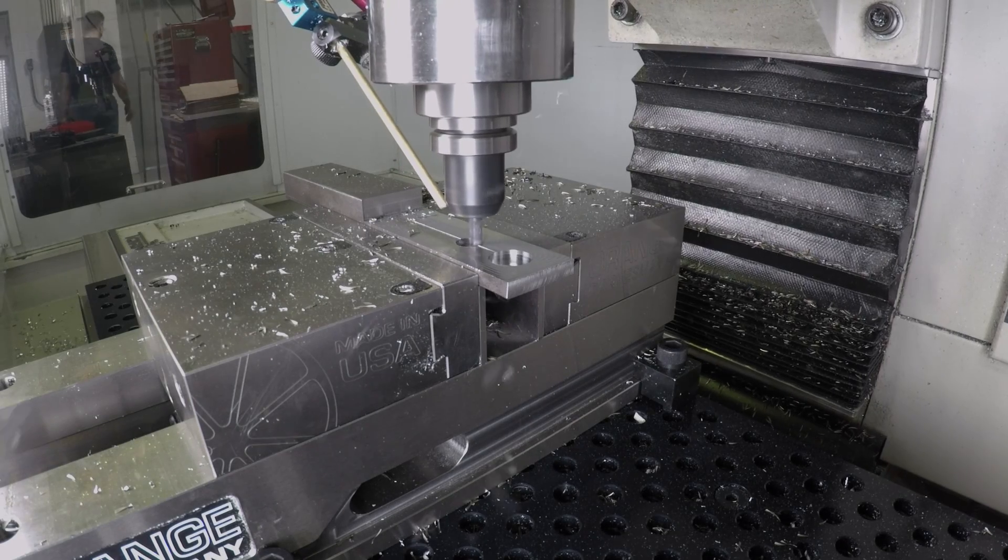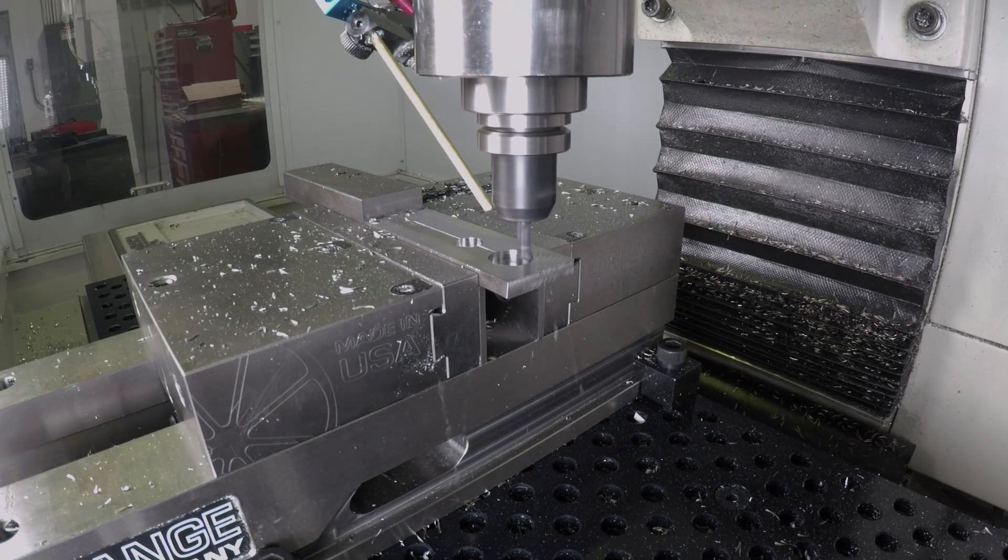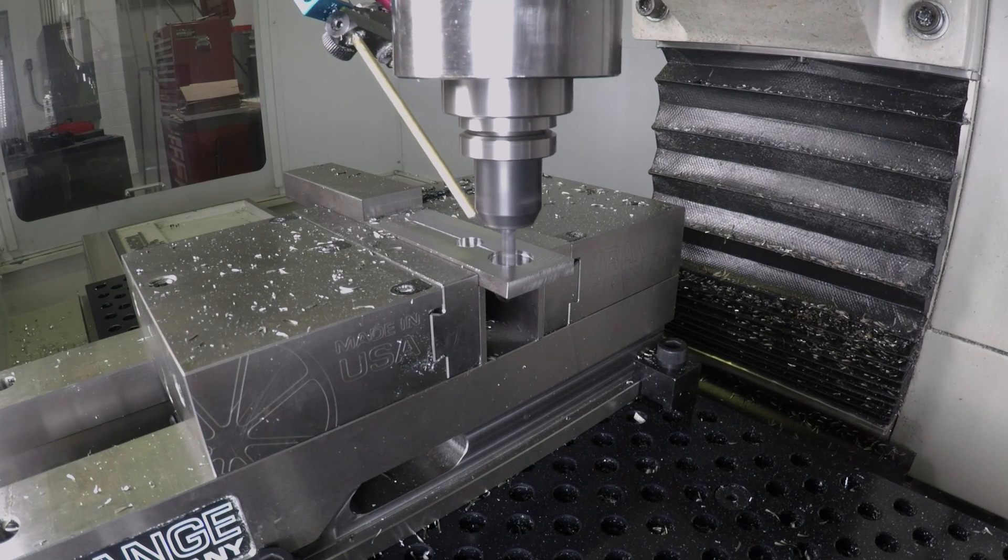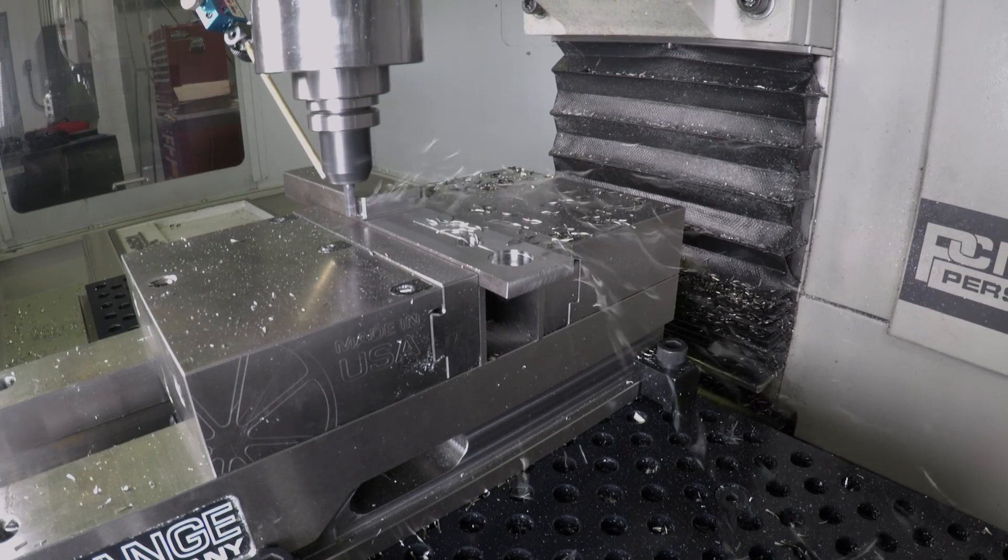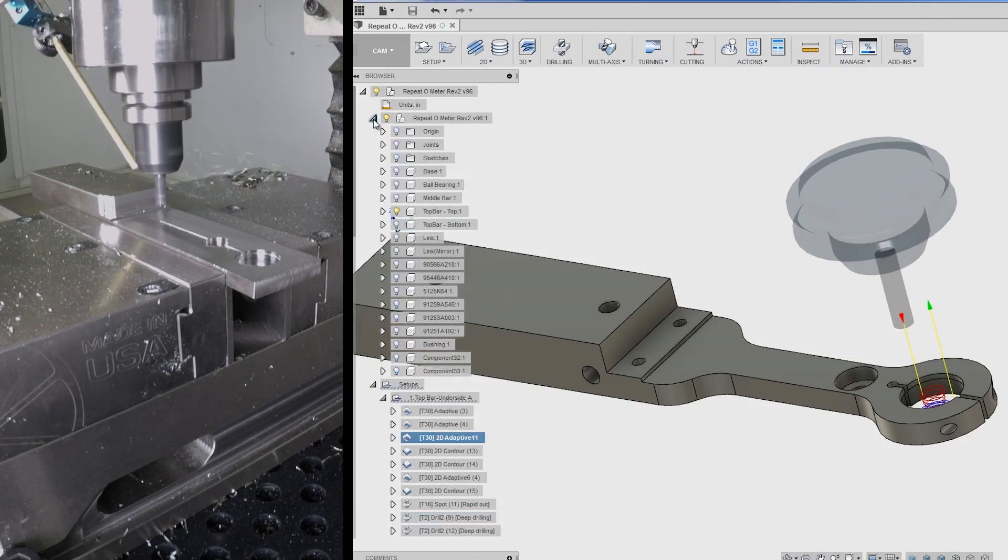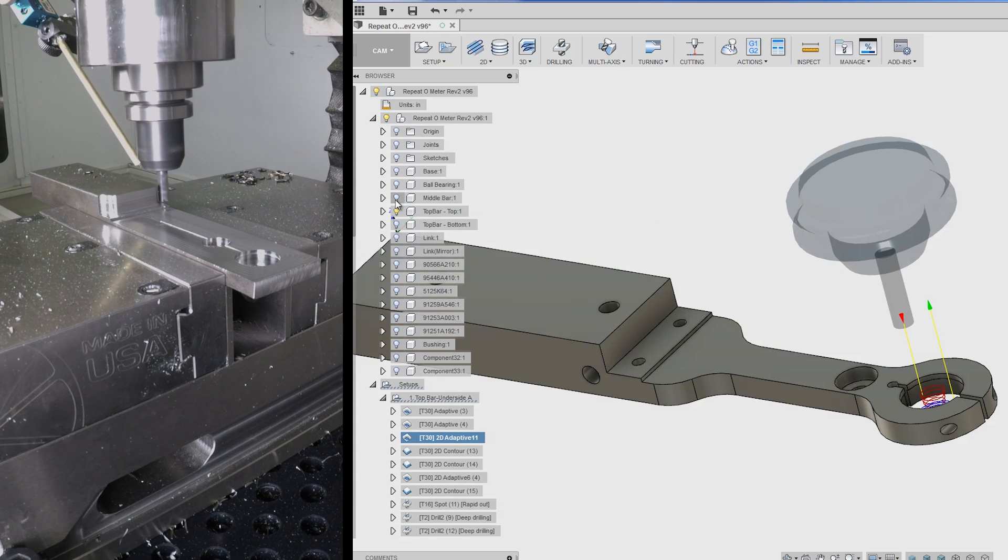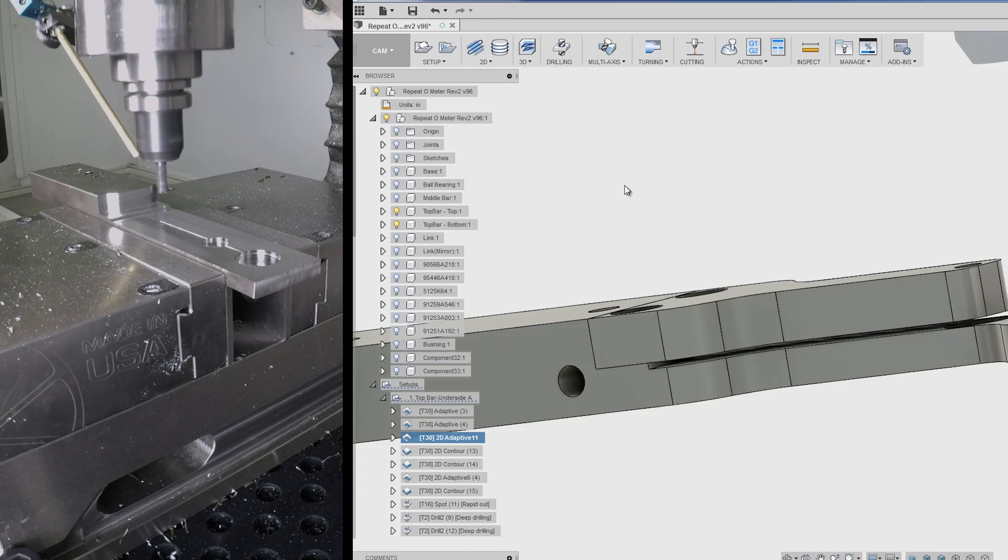Coming back with a 2D contour to clean that geometry up. We're opening up the little lip there, cleaning up the sidewall and the shelf. This is where we'll have the lower bar attach in. That little shelf is what will act as our spreader.